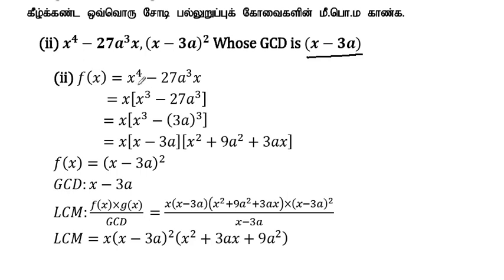First, f(x) is equal to x⁴ - 27a³x. We can take x common, giving x(x³ - 27a³). We recognize x³ - 27a³ as x³ - (3a)³, which fits the identity a³ - b³ = (a - b)(a² + ab + b²).